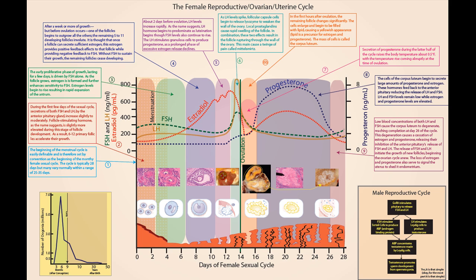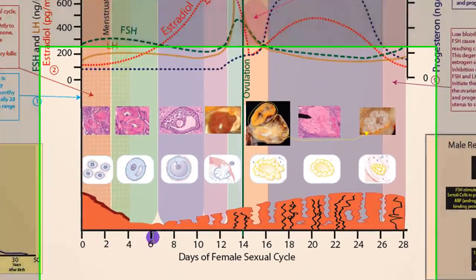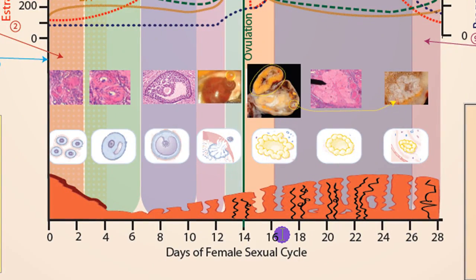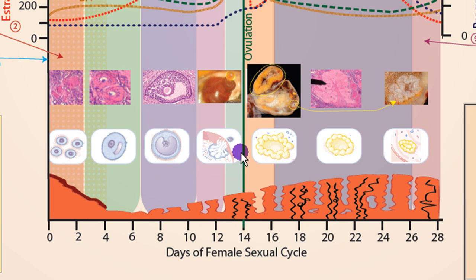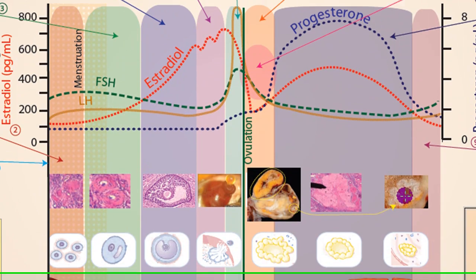Let's start to break down this complexity a little bit by showing what we got here. First of all, down at the bottom are the days of the female sexual cycle, which is usually around 28 days, but it can vary considerably up to something like 45 days or down to as low as 20 days. Along here I have several cartoons or simple figures of the different oocytes or follicular stages — the oocyte is the egg in the middle, and the whole structure is called the follicle. And then I have real pictures of the same structures as well.